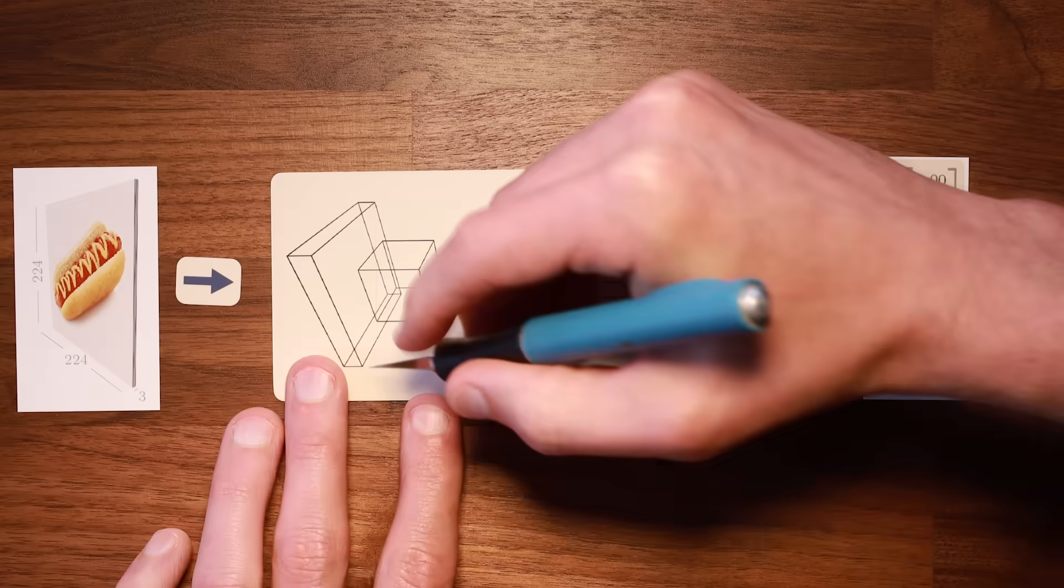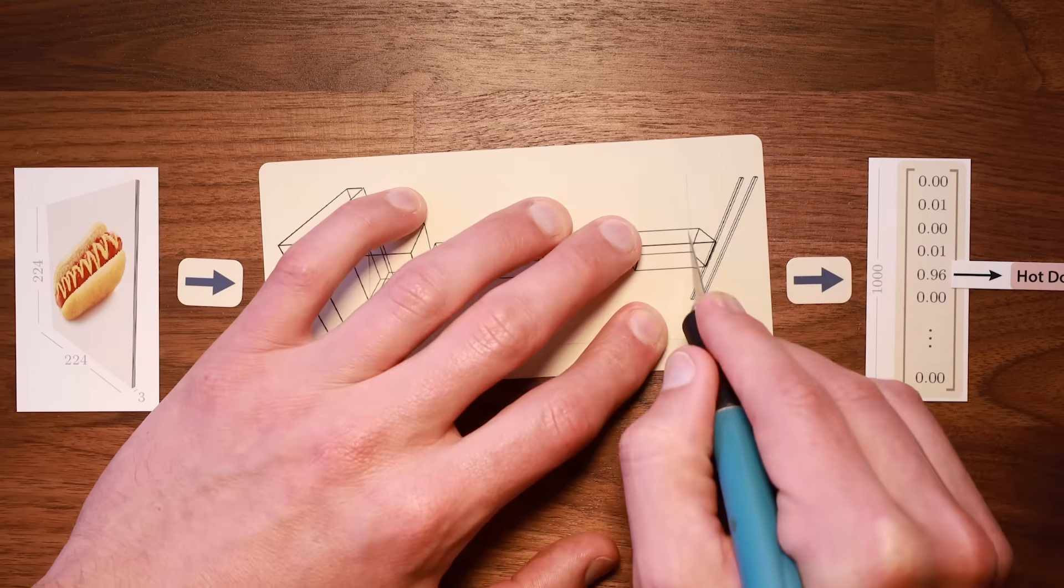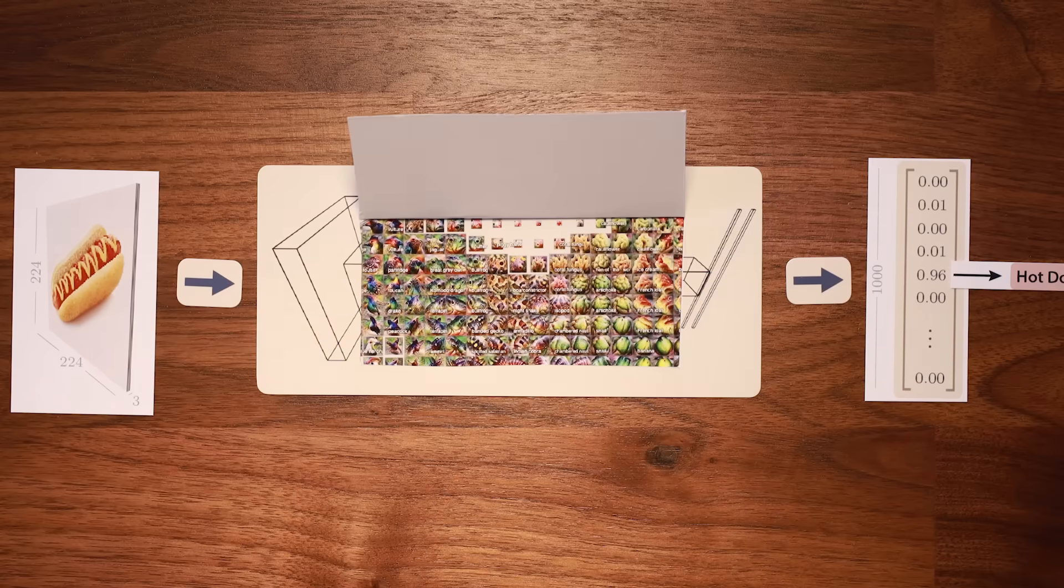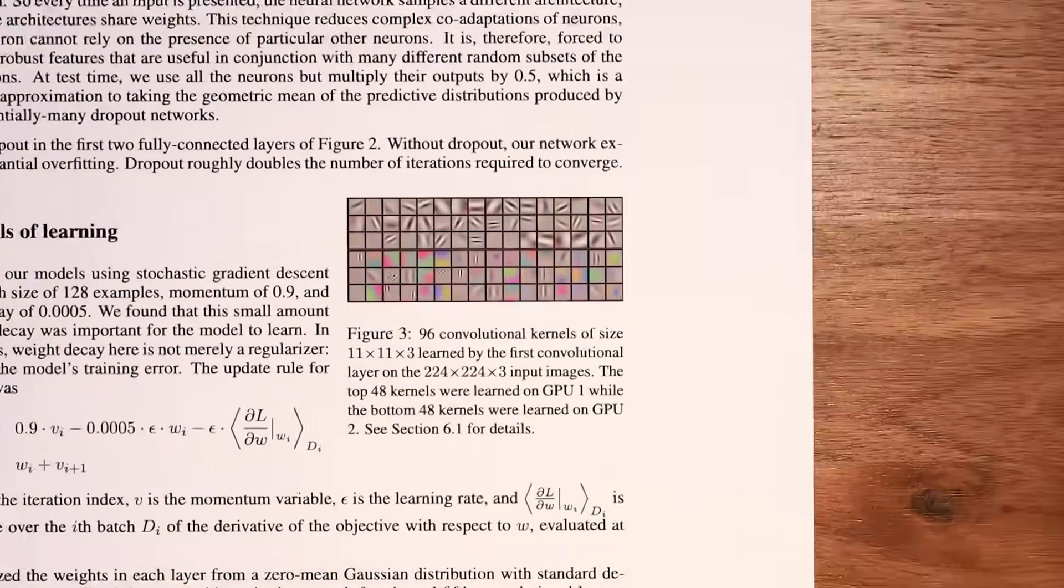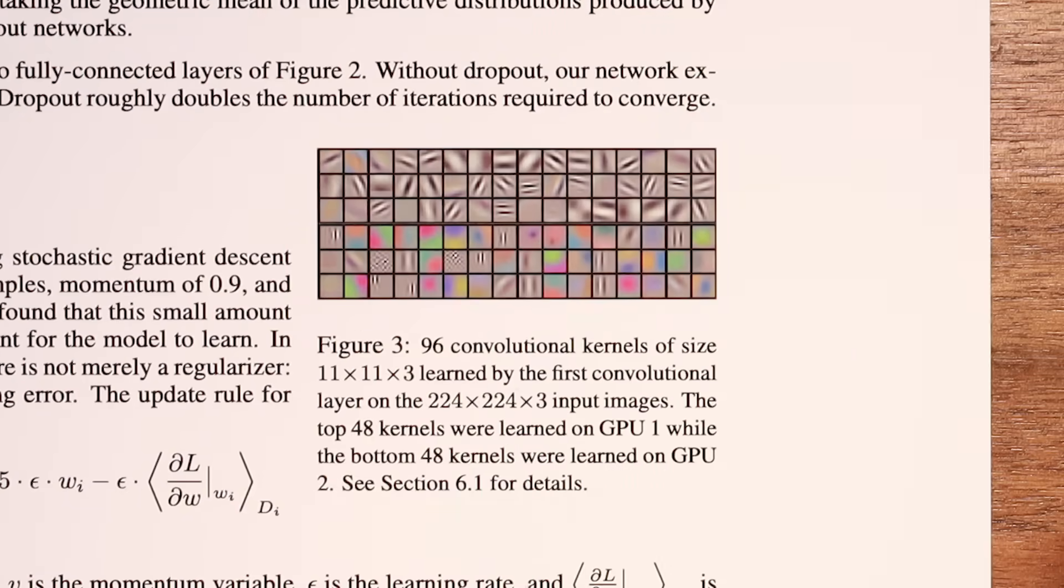One nice thing about vision models, however, is that it's easier to poke around under the hood and get some idea of what the model has learned. One of the first under the hood insights that Krizhevsky, Sutskever, and Hinton show in the AlexNet paper is that the model has learned some very interesting visual patterns in its first layer.